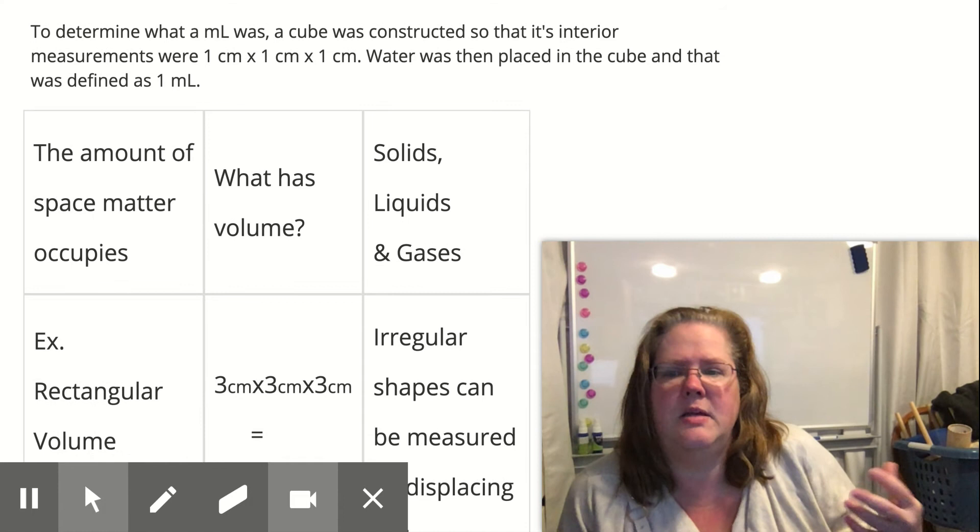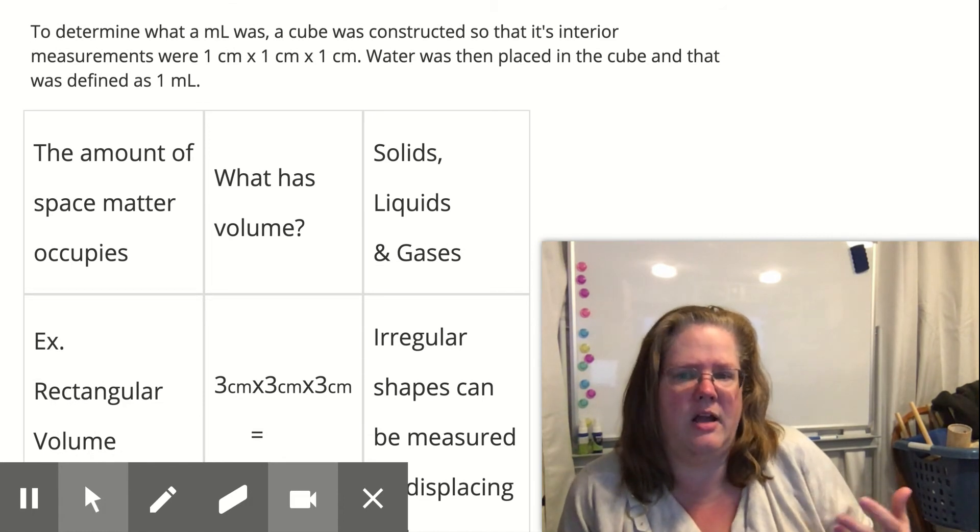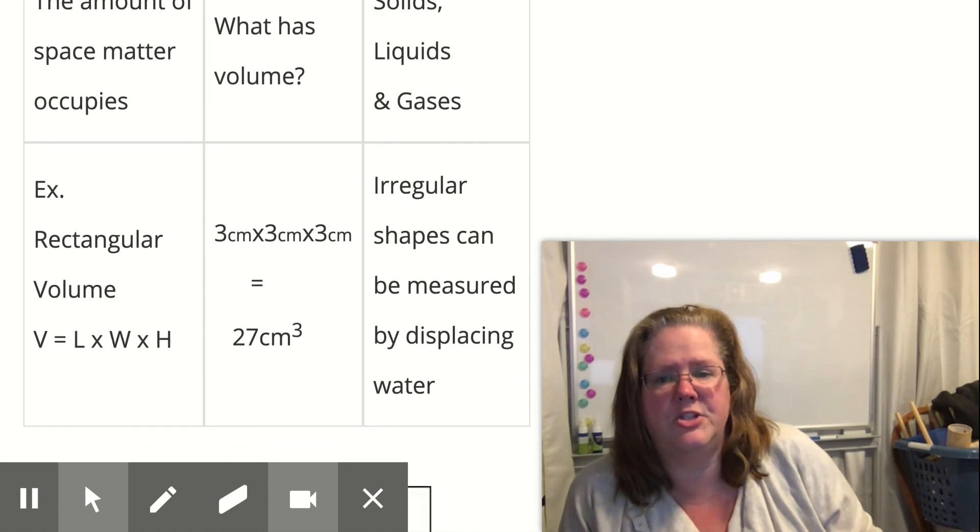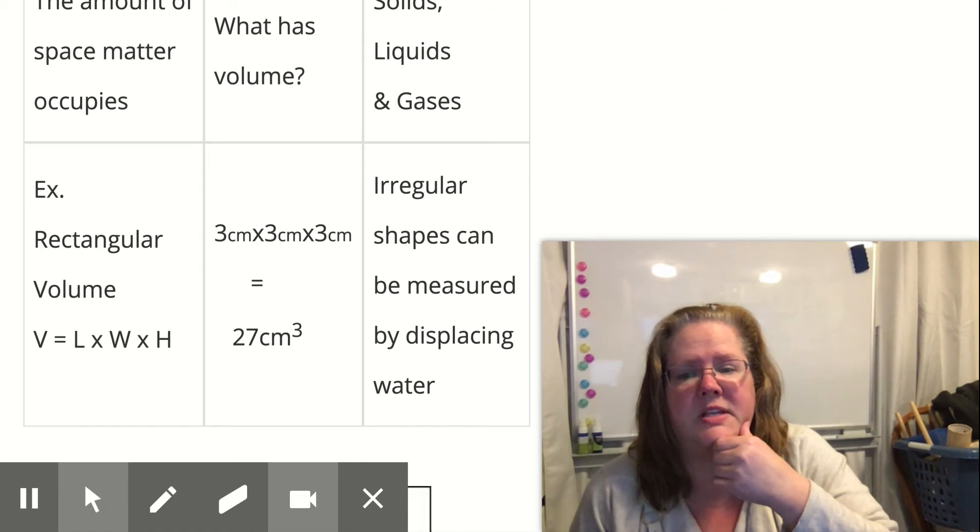So what is volume? It's the amount of space matter occupies. So solids, liquids, and gases all have volumes. We can find irregularly shaped objects, the volume of it, by using something called displacement.